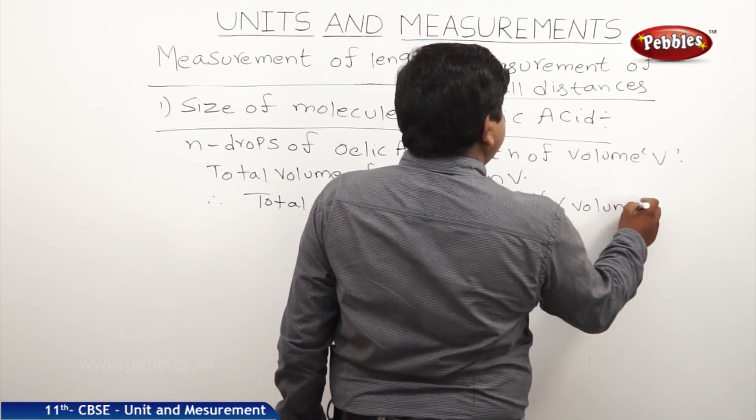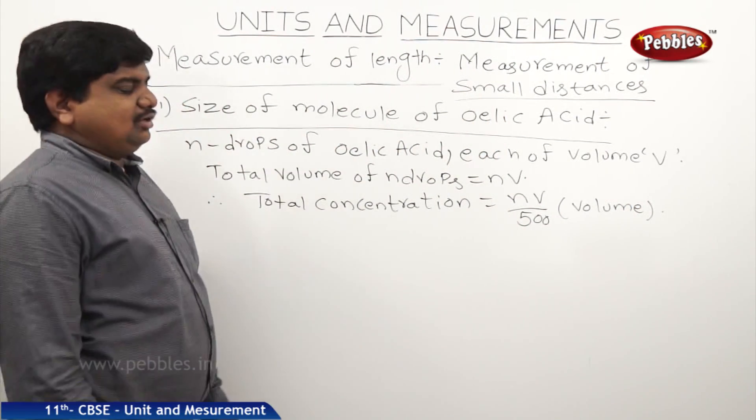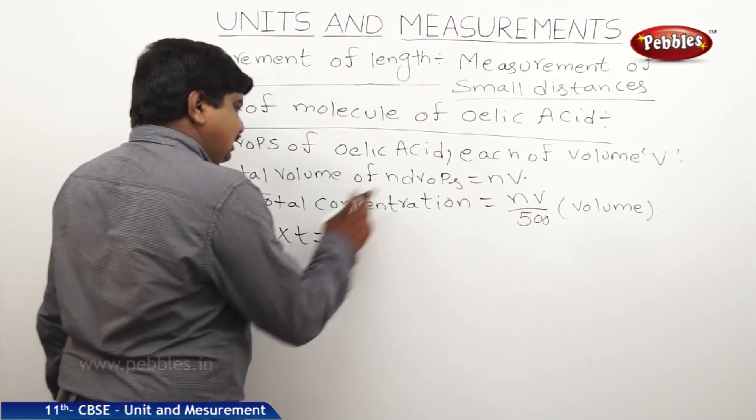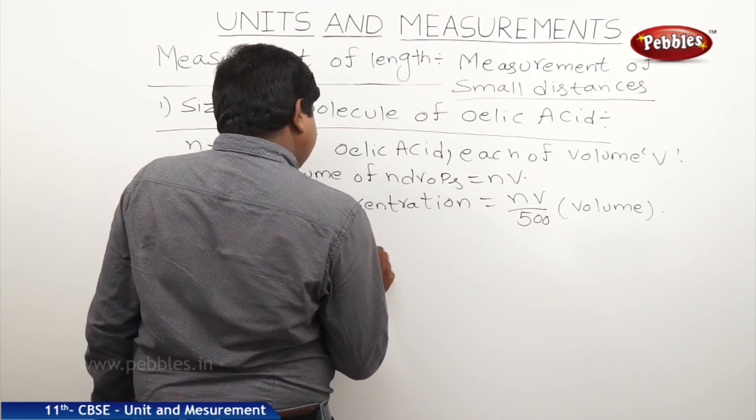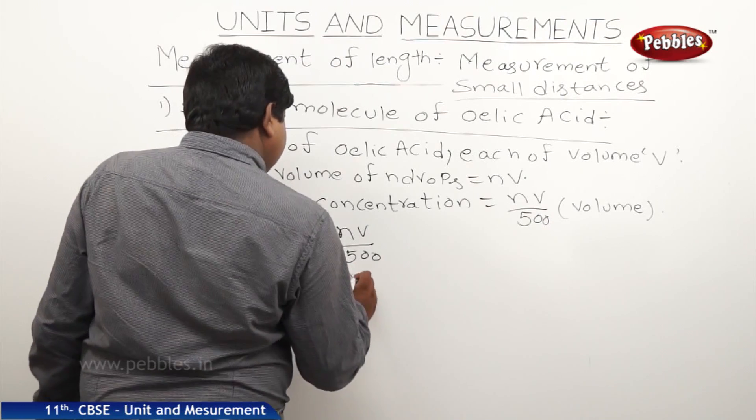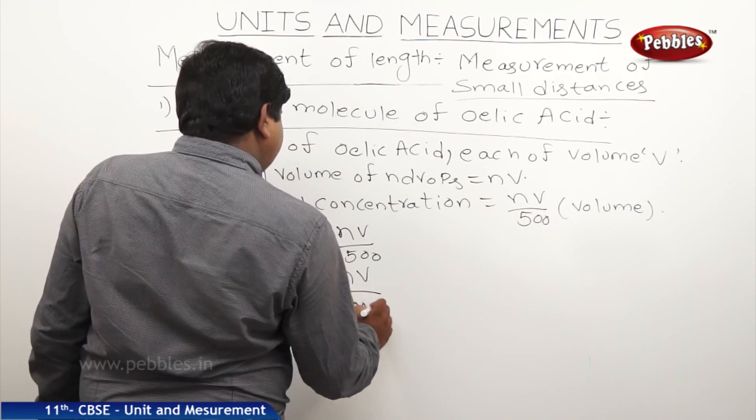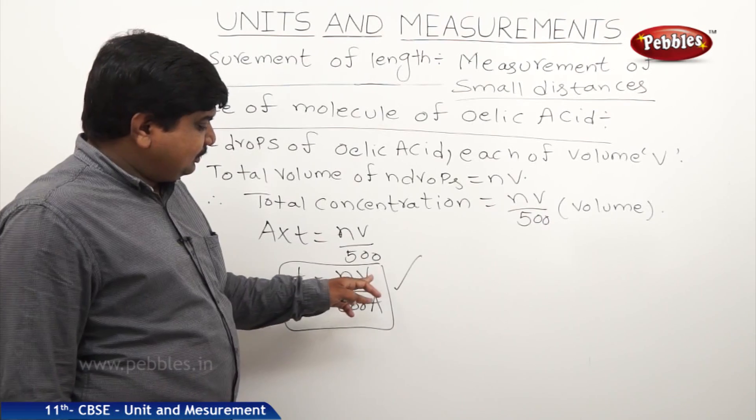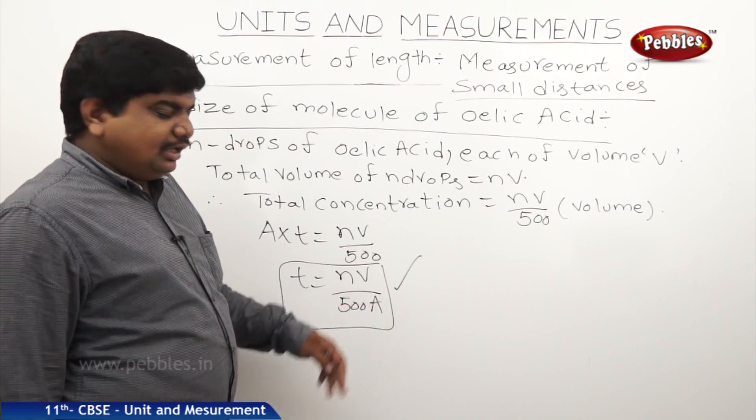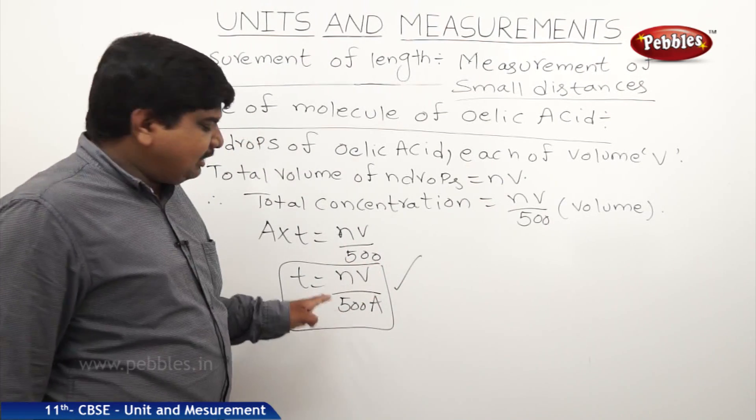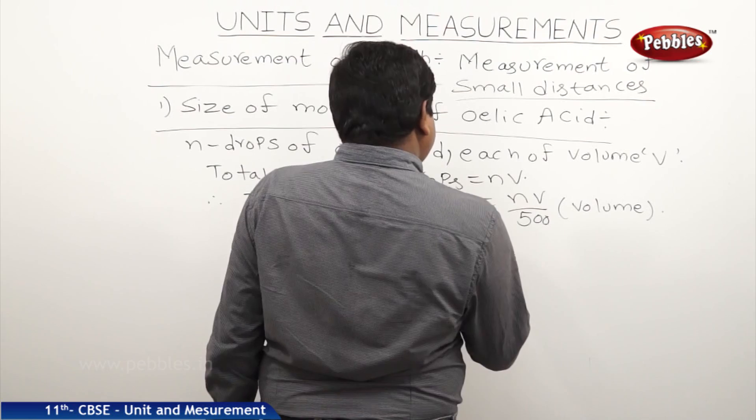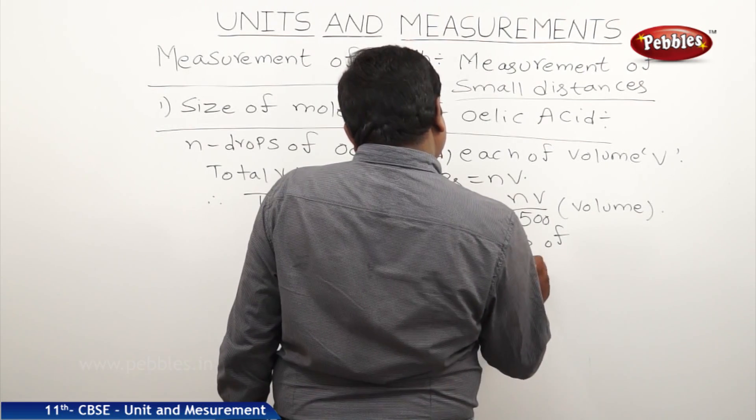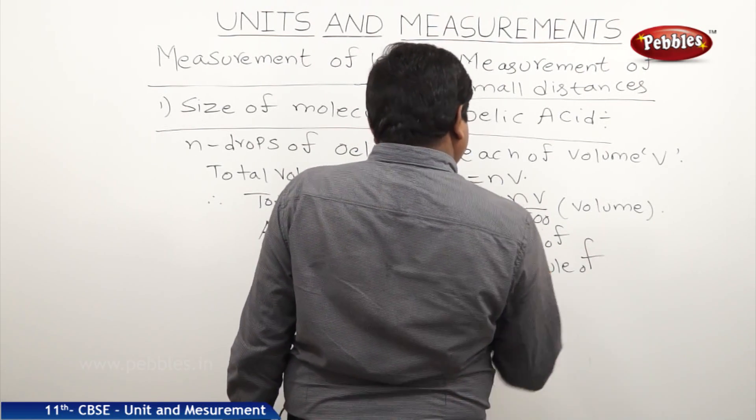We know that area times thickness is the volume. So area times thickness equals nv by 500. Therefore thickness equals nv by 500a. We can substitute the number of drops, the volume by 500, times the area of each drop. By substituting all the values in this formula we will get the thickness of each molecule of oleic acid.